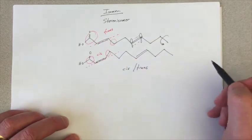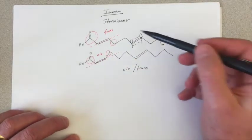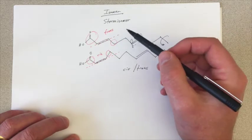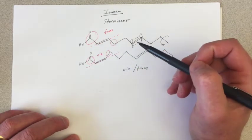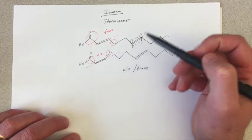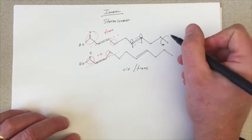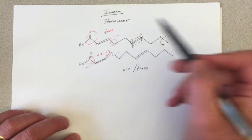Now, this was just in fatty acids. You may have heard of trans fats. This is where they come from, is they have some trans double bonds in them, which normally don't occur in vegetable or animal sources. They're laboratory derived fats.